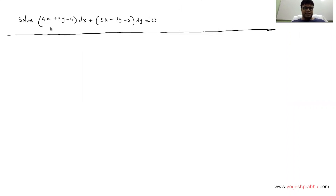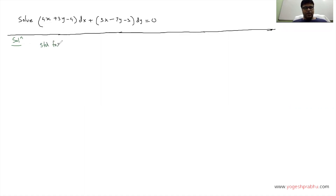We now have to solve this differential equation. I'll teach you the method of solving it — it's actually very simple. The first thing you have to do is compare with a standard form. The standard form of this type of equation is M dx + N dy = 0.